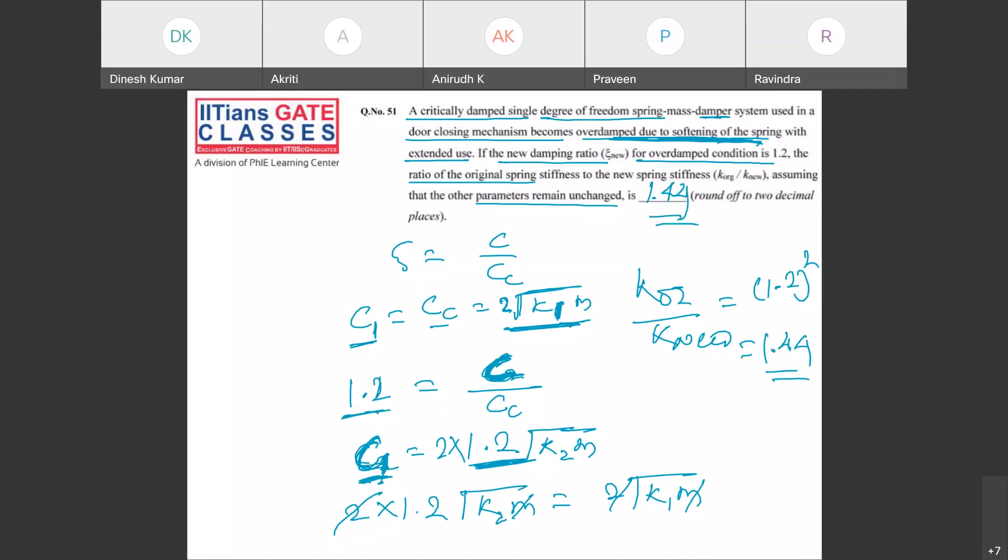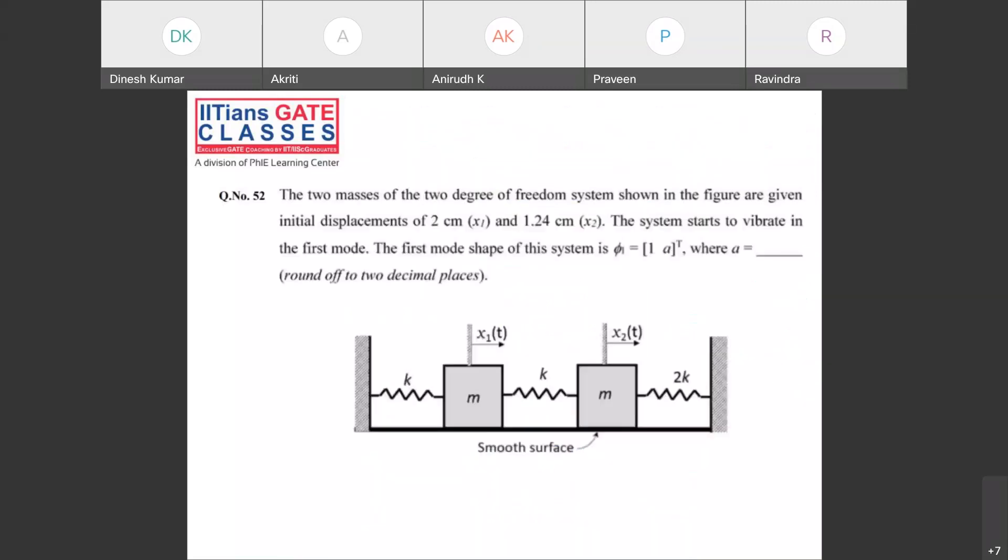Now look into this last question, question number 52. It is from 2 degree and it's a simple and good question. What is given: the two masses of two degree of freedom system shown in the figure are given initial displacement of 2 centimeter, X₁ initial is 2 centimeter and X₂ is 1.24 centimeter. The system starts to vibrate in first mode only.